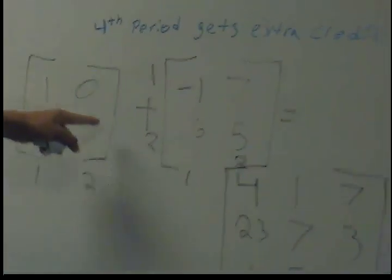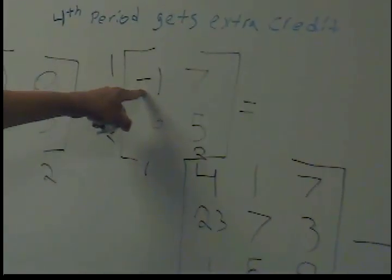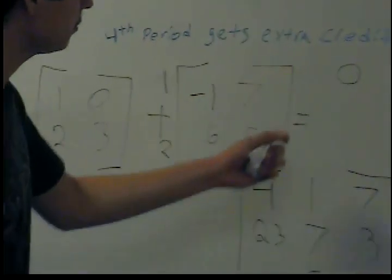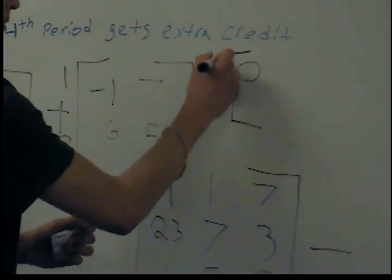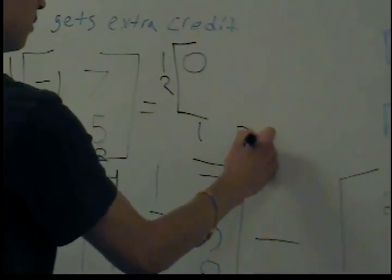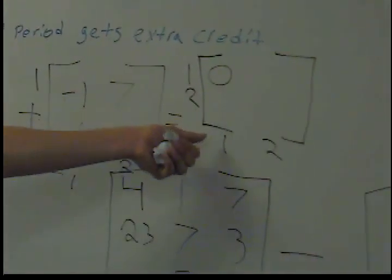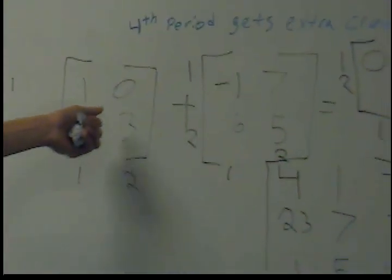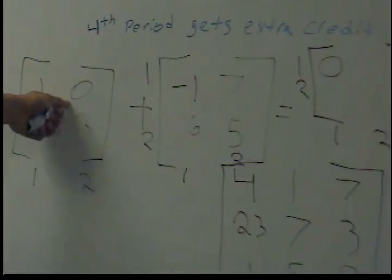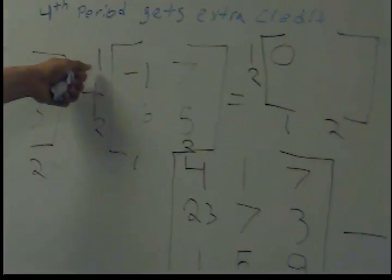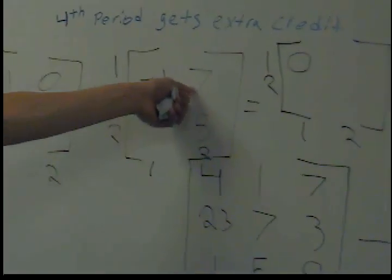So do 1 plus negative 1, which is 0. And that would give you row 1, column 1. And then you go back. Row 1, column 2 plus row 1, column 2 is 7. So 0 plus 7 is just 7. And you just keep on going.